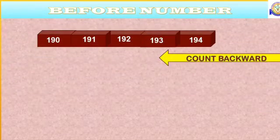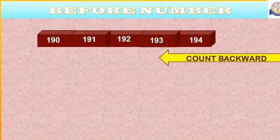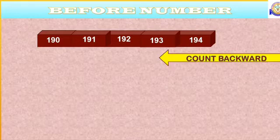Children, you have learned to read and write three-digit numbers from 100 to 200. Now the time to learn how to write before numbers. If you want before number, you should count one step backward. Means you should subtract one from the given number. Let's see how to do it.